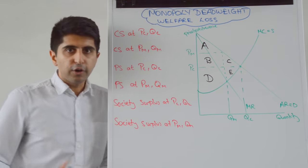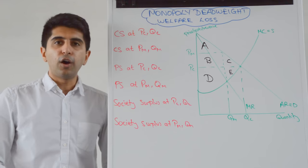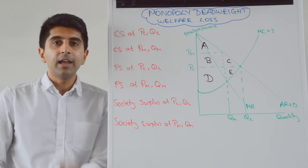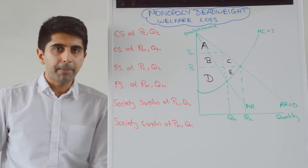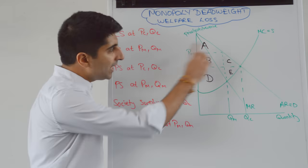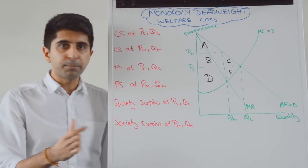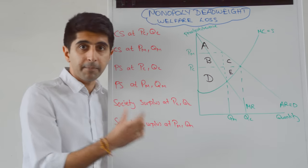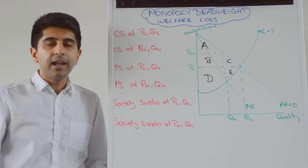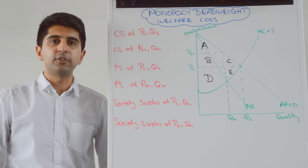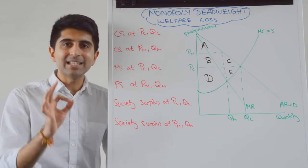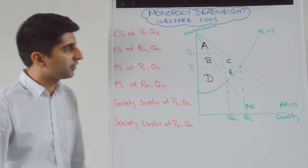What we are now going to look at is comparing the level of consumer and producer surplus at competitive outcomes compared to monopoly outcomes. PM and QM is a monopolist price and quantity taken from the profit maximization point, whereas PC and QC is a competitive firm's price and quantity taken at the allocatively efficient level of production.